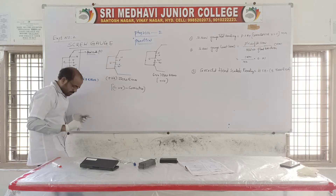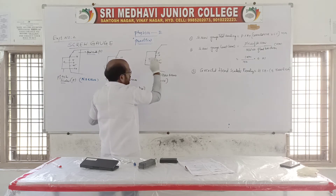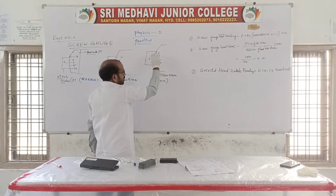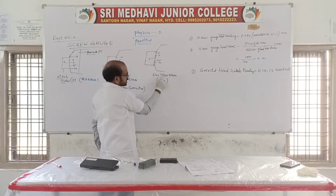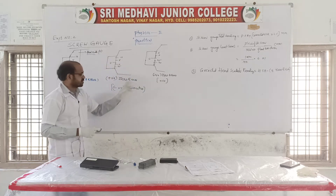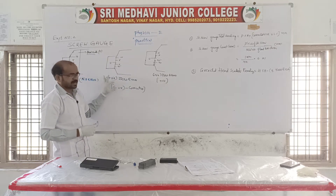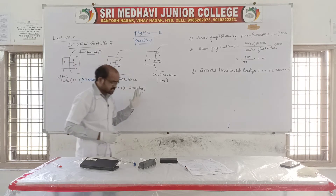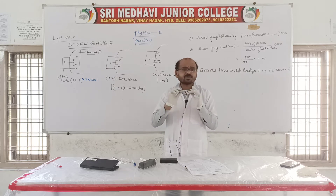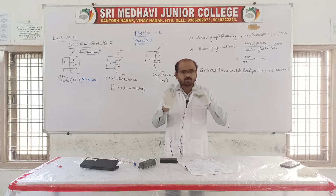On the other hand, if the head scale zero is above the pitch scale zero, that means some numbers are above zero, so we call it a negative zero error. For a negative error, the correction is positive — we should add the value. These corrections must be applied at the start of the experiment.